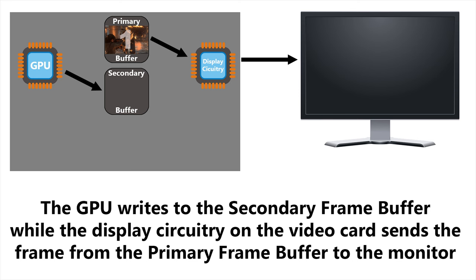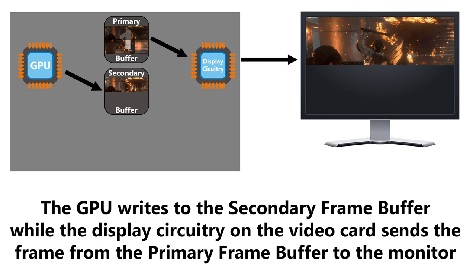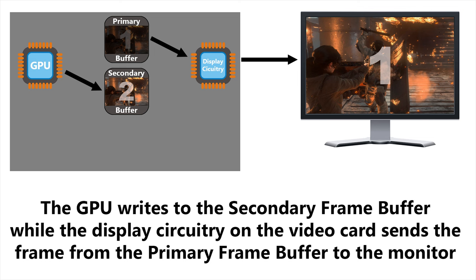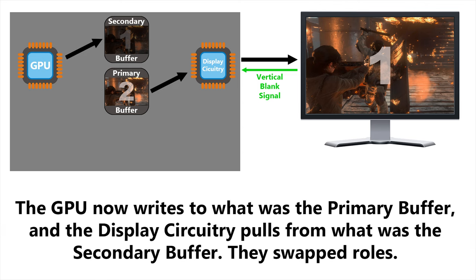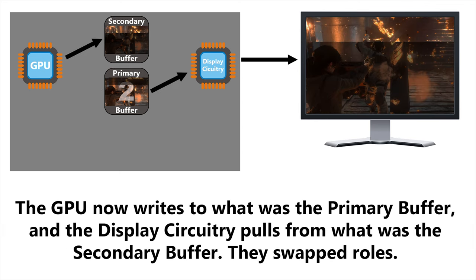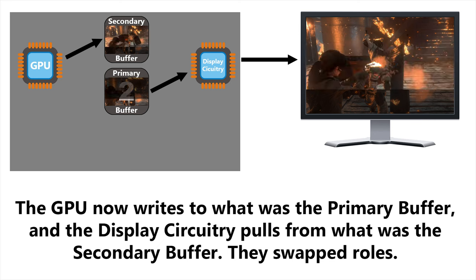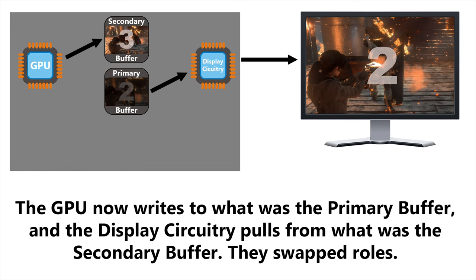To get around this problem, there are actually two frame buffers: a primary, or front buffer, which feeds the display circuitry, and a secondary, or back buffer, that the GPU writes to. When the monitor has finished drawing a frame, we get the V-Sync signal. What happens then — is the secondary buffer copied into the primary one? No, that would be slow and inefficient. Instead, the two buffers swap roles. What was the secondary buffer becomes the primary one, and what was the primary is now the secondary. This way, the GPU can keep working and get the next frame ready, so the graphics card and the monitor are working together in perfect synchronisation.